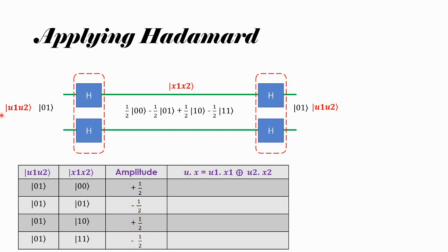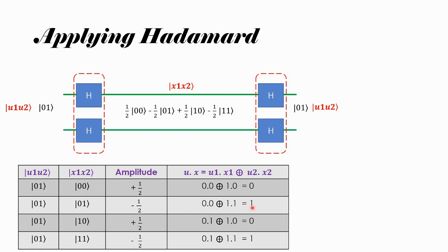Now, to make things interesting, let us calculate u·x, the inner product of u and x. u·x is u1×x1 XOR u2×x2. Computing this for each case: for |00⟩, 0 XOR 0 = 0; for |01⟩, 0 XOR 0 = 0; for |10⟩, 0 XOR 1 XOR 1 = 1; for |11⟩, we also get 1. So whenever u·x = 1, the amplitude has a minus phase. Whenever u·x = 0, the amplitude is positive. The magnitude is always 1/2.